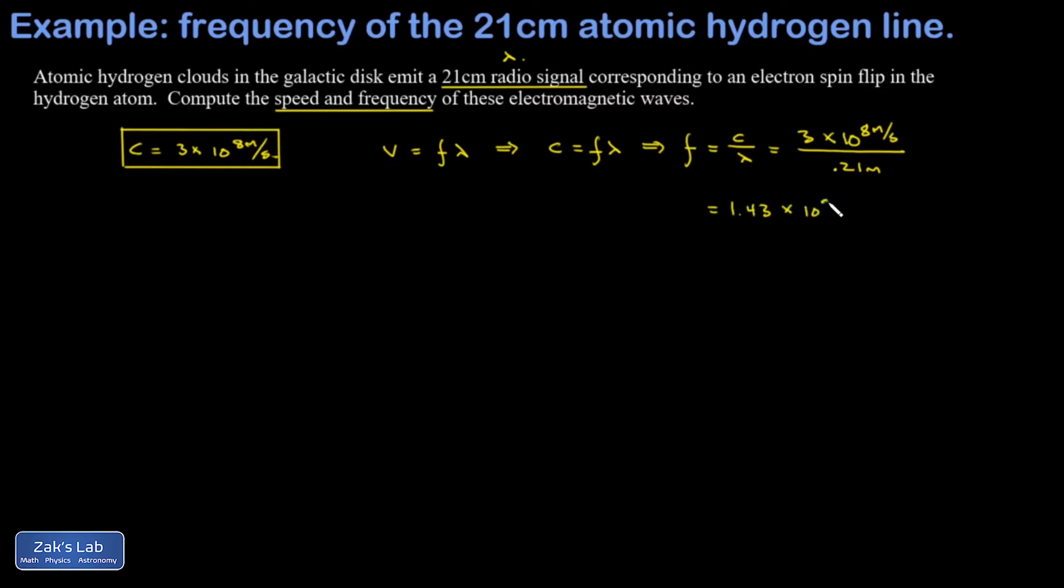times 10^9 hertz. It would be most appropriate to express this in gigahertz. A gigahertz is 10^9 hertz, so I get 1.43 gigahertz.